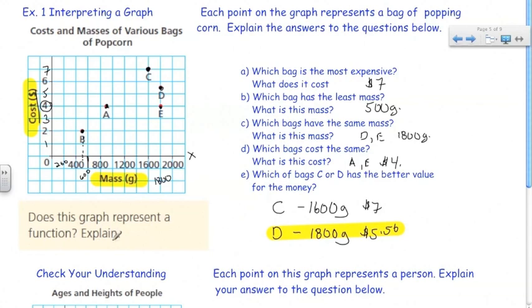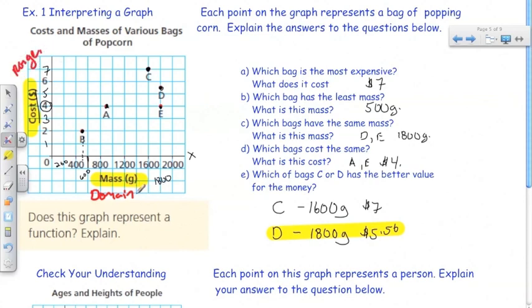The extension question is, does this graph represent a function? Well, remember we said that the mass is the domain because the domain is always located along the horizontal axis. And the cost is the range. Our definition for a function is each element in the domain can only be associated with one element in the range. Every bag of popcorn only has one price. Each bag of popcorn is only associated with one price. Therefore, each element in the domain is only associated with one element in the range. So, this is a function.